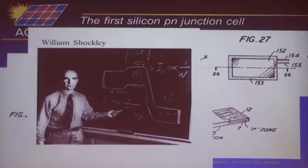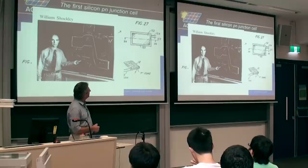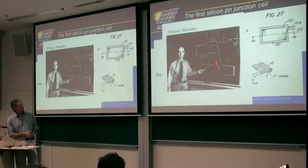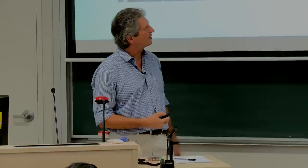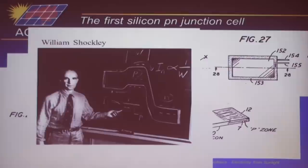The discovery of the PN junction triggered understanding of doping of semiconductors and P-type materials. The theory of the PN junction progressed very rapidly. This is William Shockley, who got a Nobel Prize for essentially working out the theory of PN junctions and inventing devices that used it — namely the bipolar junction transistor, which is two PN junctions back to back. If you read his theory of PN junctions, it's pretty much like reading a modern textbook, even though it was done in 1949.